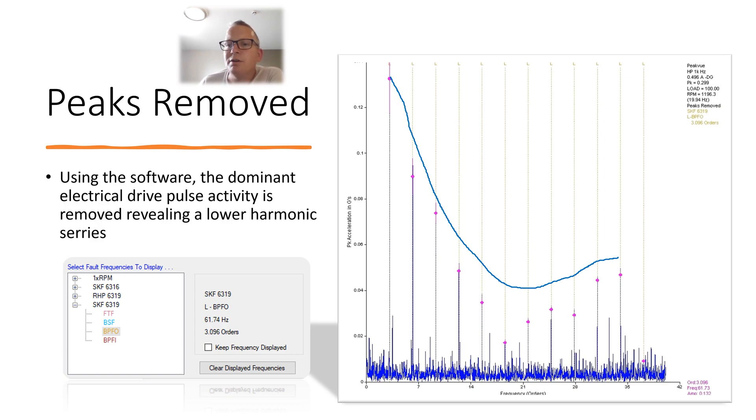So using the software, we've got the correct speed set up, put the bearings in and we confirm that this here is an inner race signal. So we're not seeing the velocity, we weren't seeing acceleration, this is purely in PeakVue. So we could say to them, this is a very early defect.